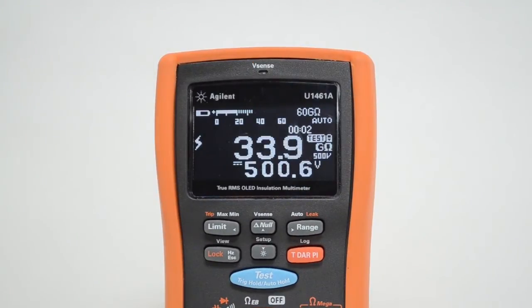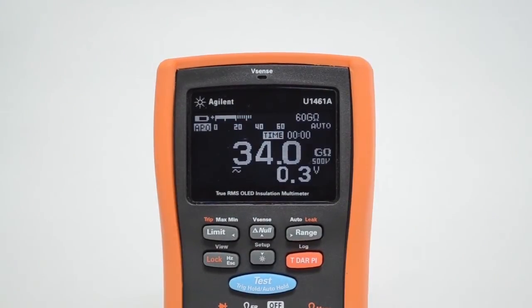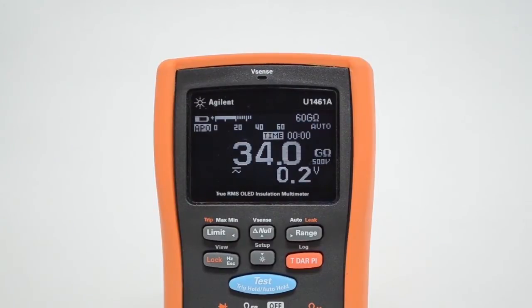The test will stop after the preset test interval of the test. The insulation resistance value is 34 giga ohm, very high from 1.5 mega ohm minimum acceptance value.